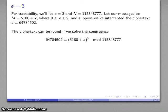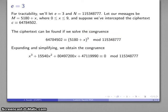The problem of recovering the original plaintext message corresponds to solving the congruence: ciphertext congruent to (5180 plus x) to the power 3 mod N. If I were to expand and simplify, if I could solve this congruence x^3 + 15540x^2 + 80497200x + 47119990 ≡ 0 mod 115348777, then I can recover what the value of x is.